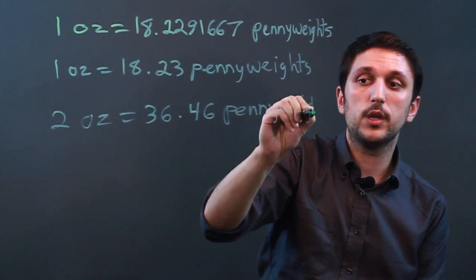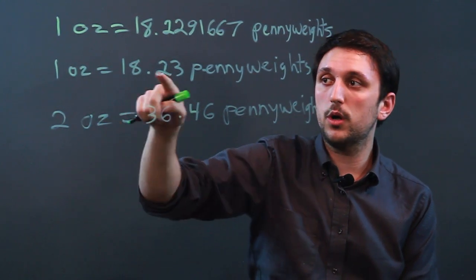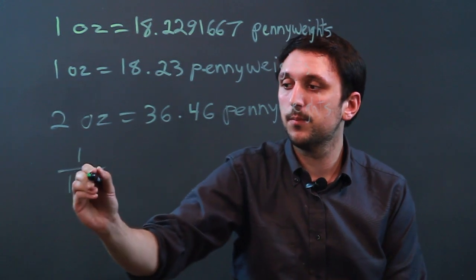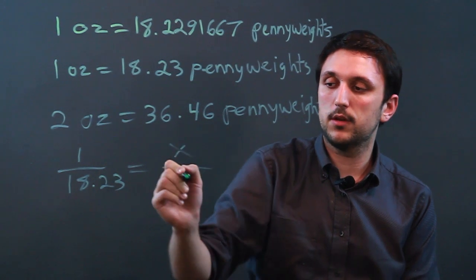And really any amount you need to find, you just set up a direct proportion. If you know that one is to 18.23, then you can make this X and you can make this a number.